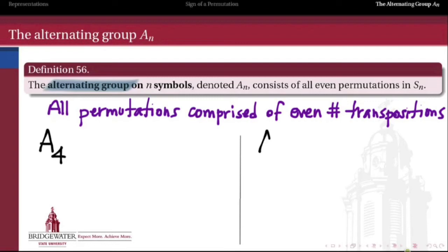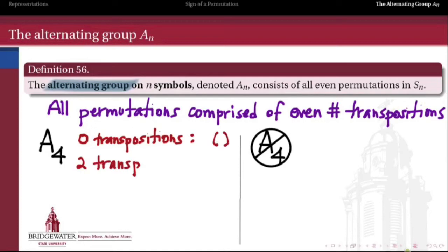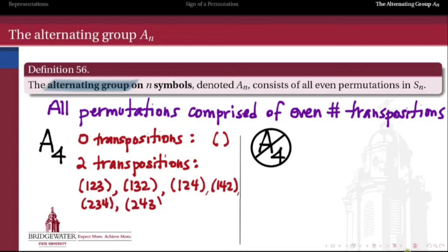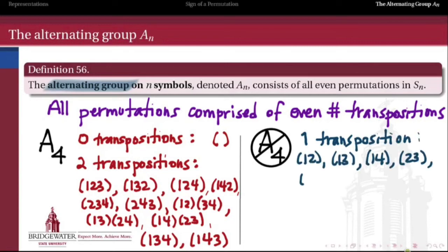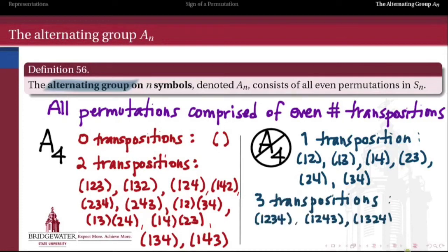As an example, what does A4 look like? Since A4 consists of elements made up of an even number of transpositions, it includes those with zero transpositions — just the identity — and those made up of two transpositions, which are all the three-cycles as well as the 2-plus-2 cycles. There are 12 such elements in A4. Meanwhile, elements made up of one or three transpositions — the single transpositions and others — do not belong to A4, forming the complementary coset of A4 inside S4.